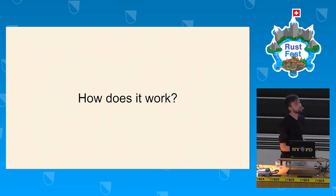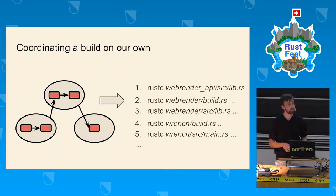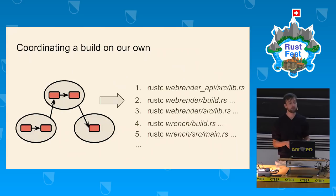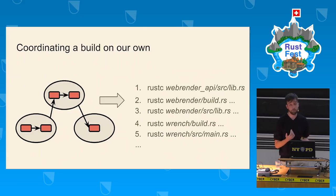How is workspace mode implemented? First, we cache the dependency structure between package targets that cargo generates. When we have that, we can map dirty packages, sort the result, and get the appropriate compiler invocations that the RLS can execute and fetch analysis data from.